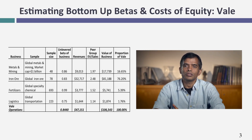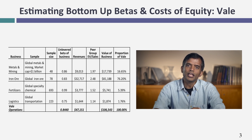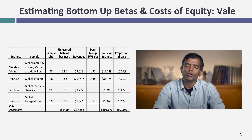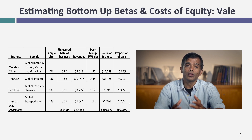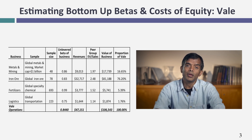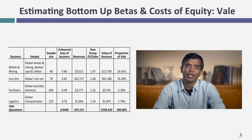Vale broke themselves down into four businesses, and I did exactly what I did for Disney — for each business, I look for publicly traded comparable firms. For all four groups, I've used global companies as my comps with a pretty large sample in each one. I get the regression betas, unlever them, and do exactly what I did for Disney to come up with an unlevered beta by business. Then I estimate a value for each of Vale's four businesses using revenues and the EV-to-sales ratio to come up with an estimated value.